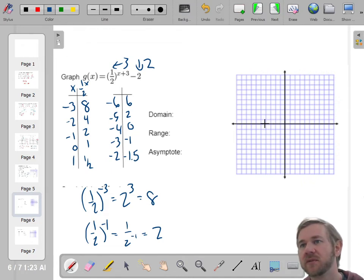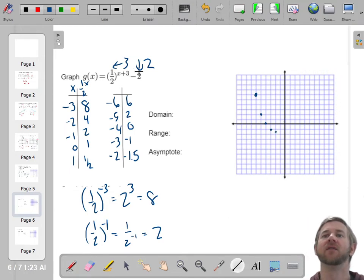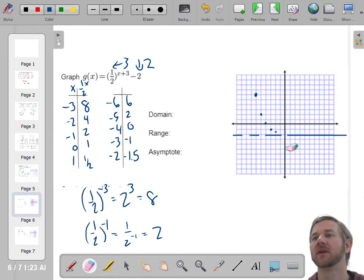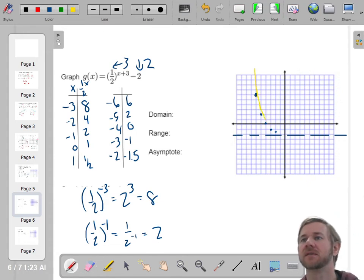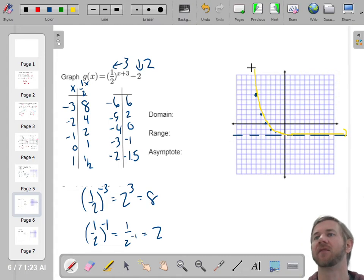Negative 6, 1, 2, 3, 4, 5, 6. 1, 2, 3, 4, 5, 6. There you go. There's negative 6, 6. Negative 5 is at 2. Negative 4, 0. Negative 3 is at negative 1. And negative 2 is at negative 1.5. If it's a vertical shift of down 2, then the asymptote will be at negative 2. So here's my graph. And when I draw it, I'll use yellow this time. It's going to look like this. And then it's going to level off on the asymptote. So that is the graph of my function.